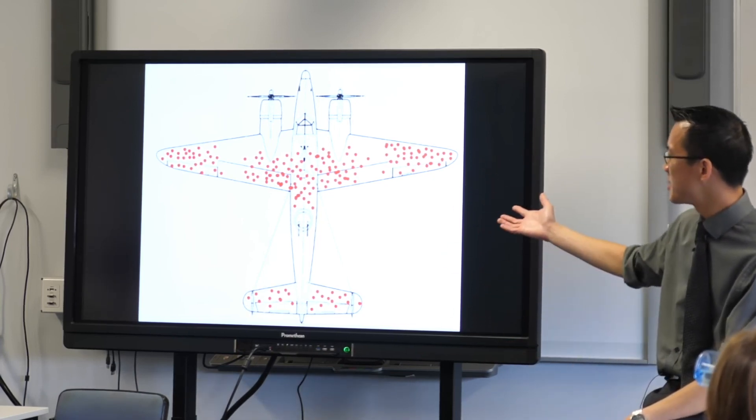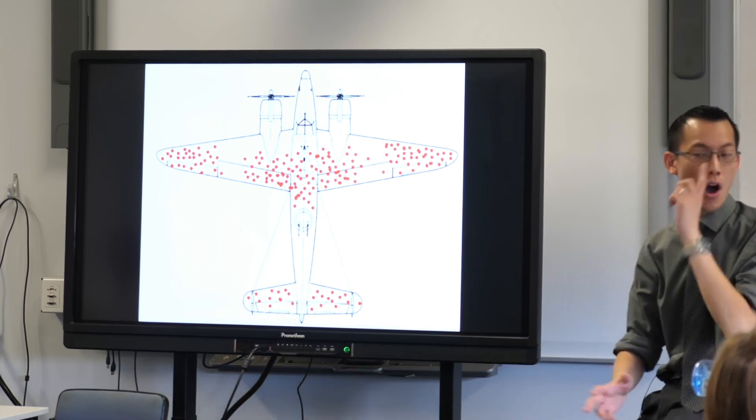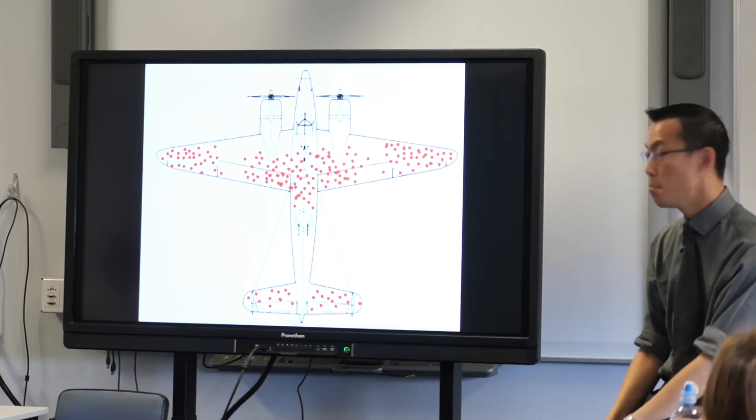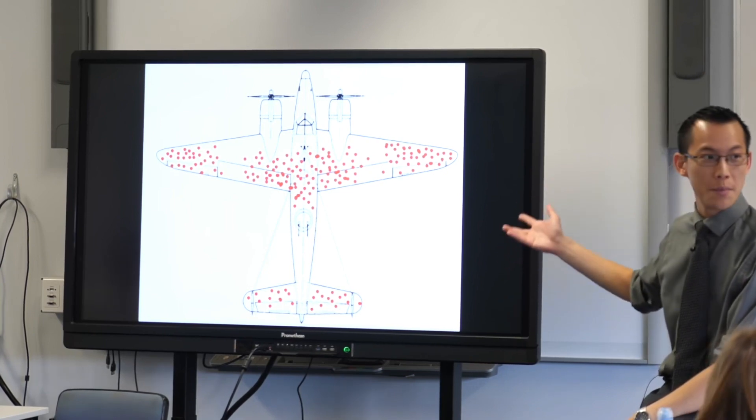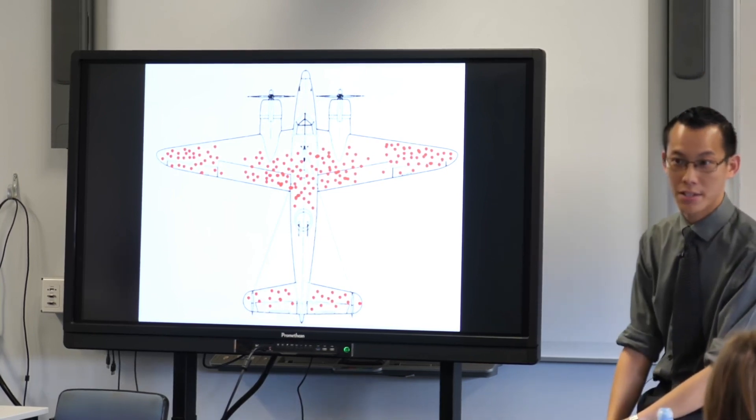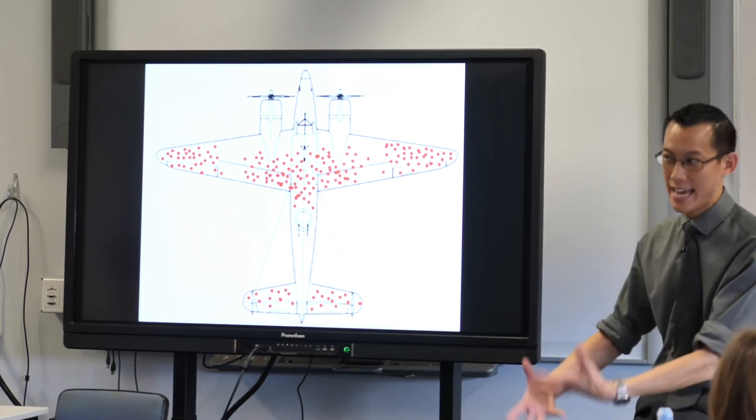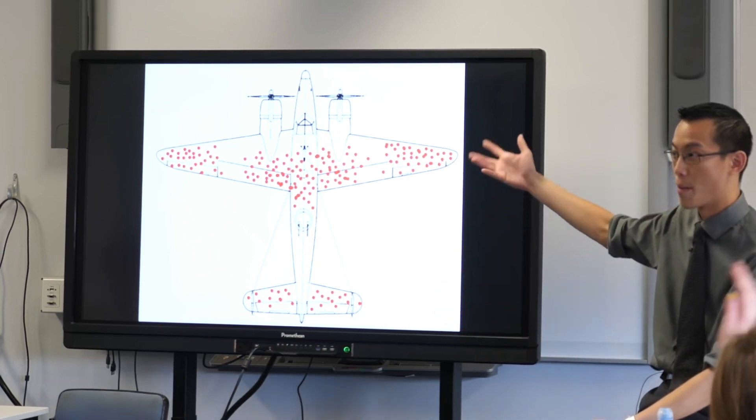And what it is, is a rough representation of some data, some bivariate data, you might say, that was collected from the aircraft of the U.S. Air Force. Would anyone like to have a guess what this data represents? Perrin, what do you think? Bullets?